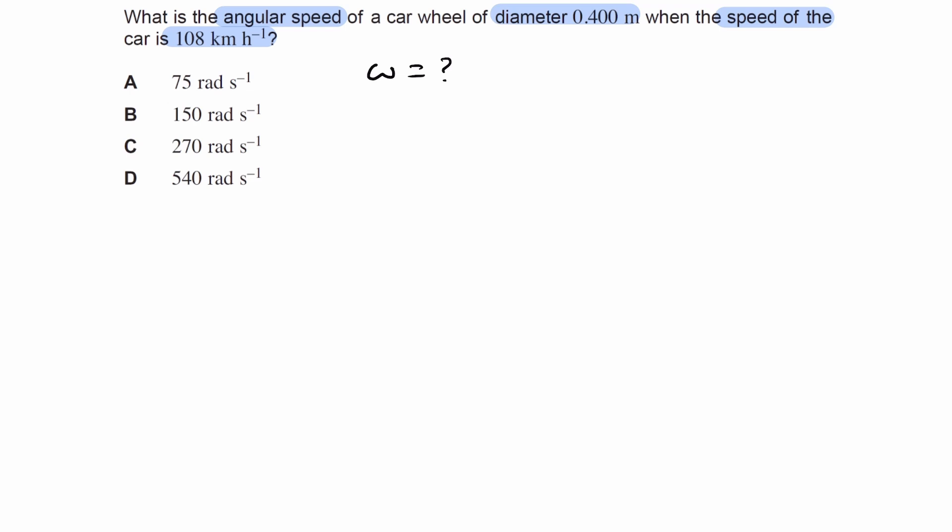If the car is moving at a speed of 108 kilometers per hour, that means the perimeter, or the edge of the wheel, is moving at the same speed.